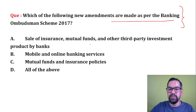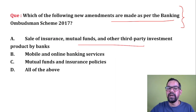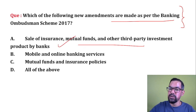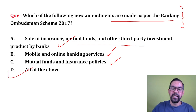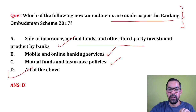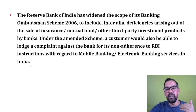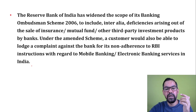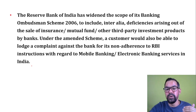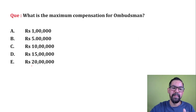Next question: Which new amendments were made as per Banking Ombudsman Scheme 2017? Sale of insurance, mutual funds, and other third-party investment products by banks were included. Mobile and online banking services were also included. All of the above — these amendments were made in the 2017 version of Ombudsman Scheme 2006, and they are now part of Integrated Ombudsman Scheme 2021.